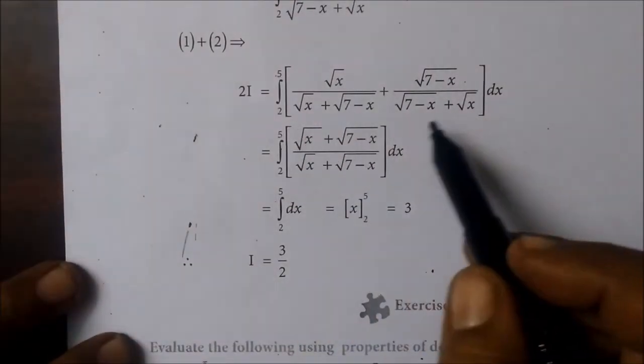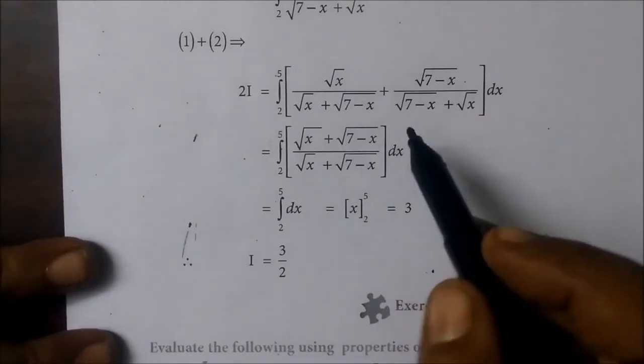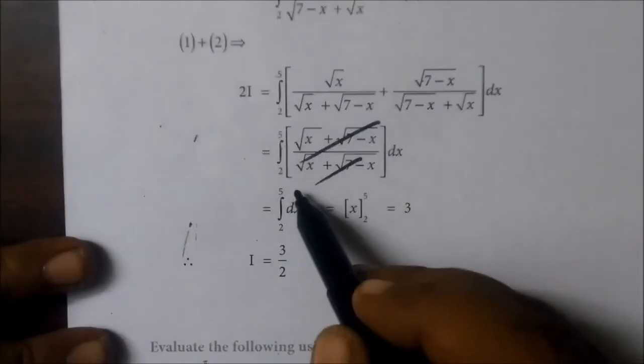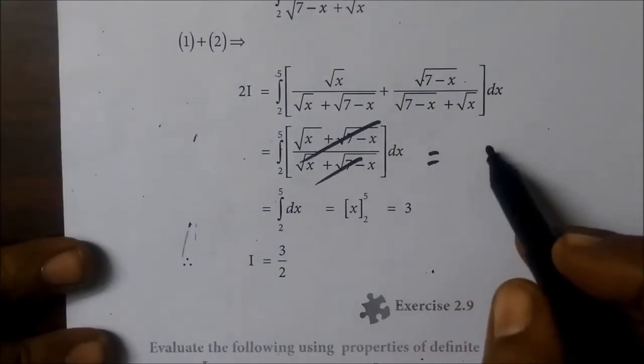2I equals integral from 2 to 5. The denominator is equal to the sum. The denominator is very easy. The business math says students are lucky. It is easy to get rid of it.